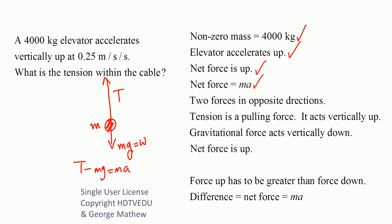We have two forces in opposite directions. Tension is a pulling force acting vertically up. Gravitational force acts vertically down. Net force is up, which means force up has to be greater than force down. The difference gives us net force, which equals Ma.